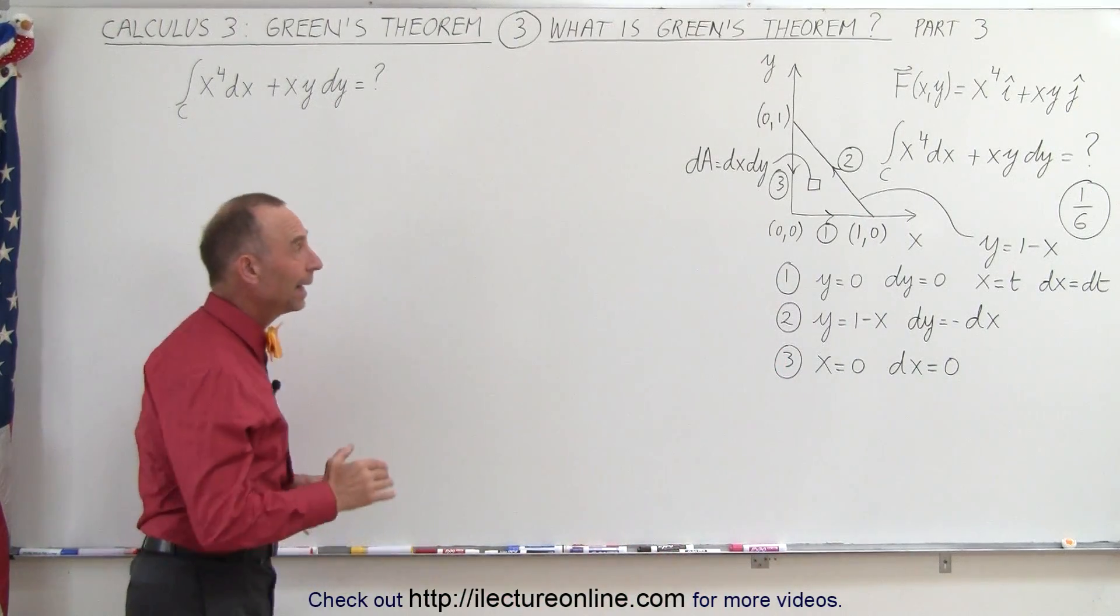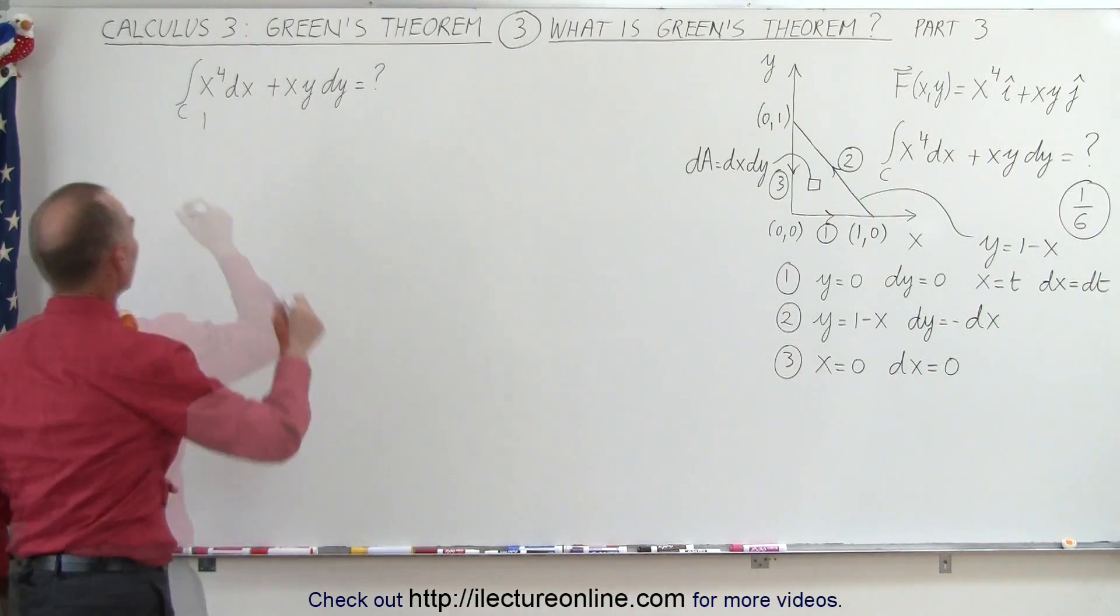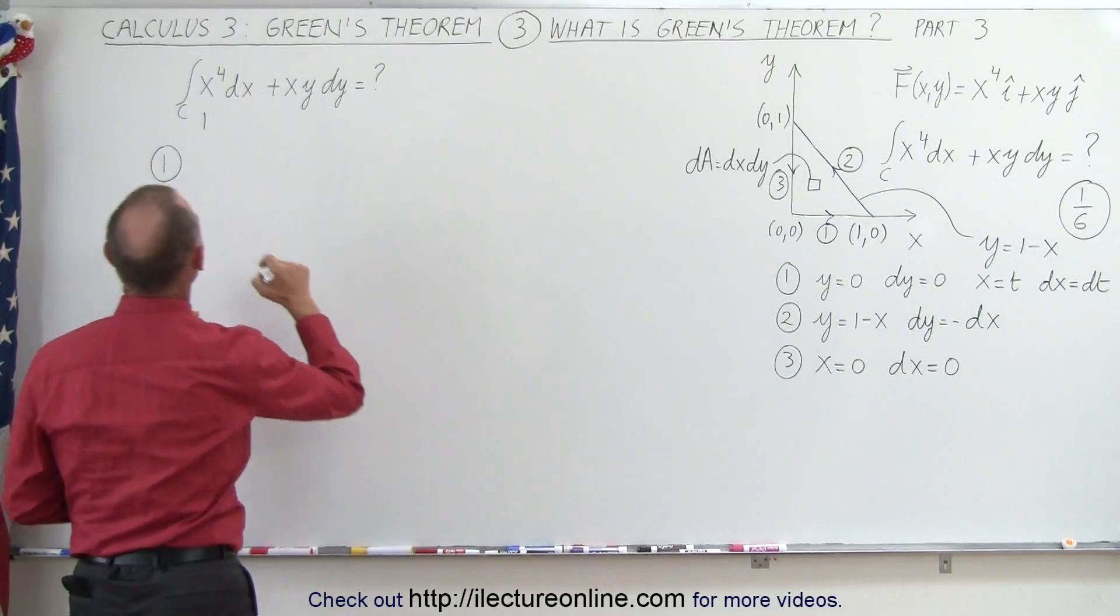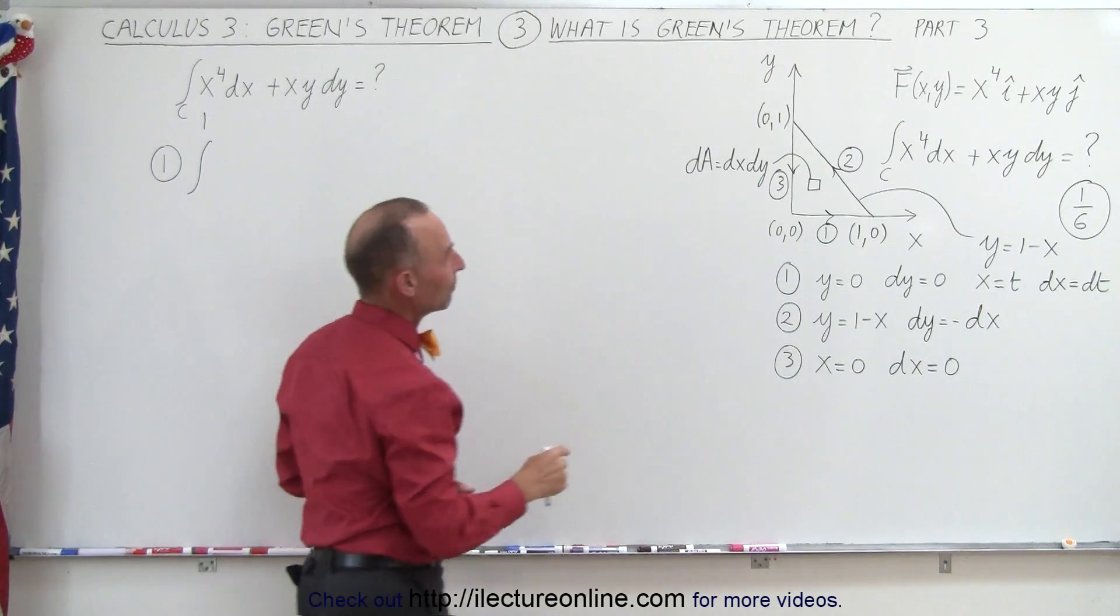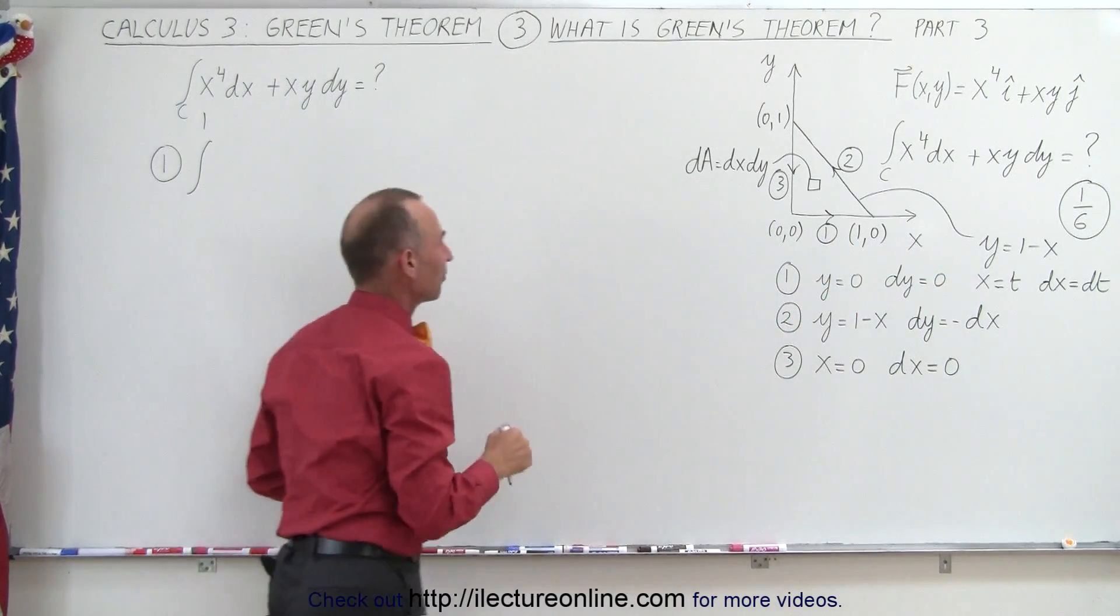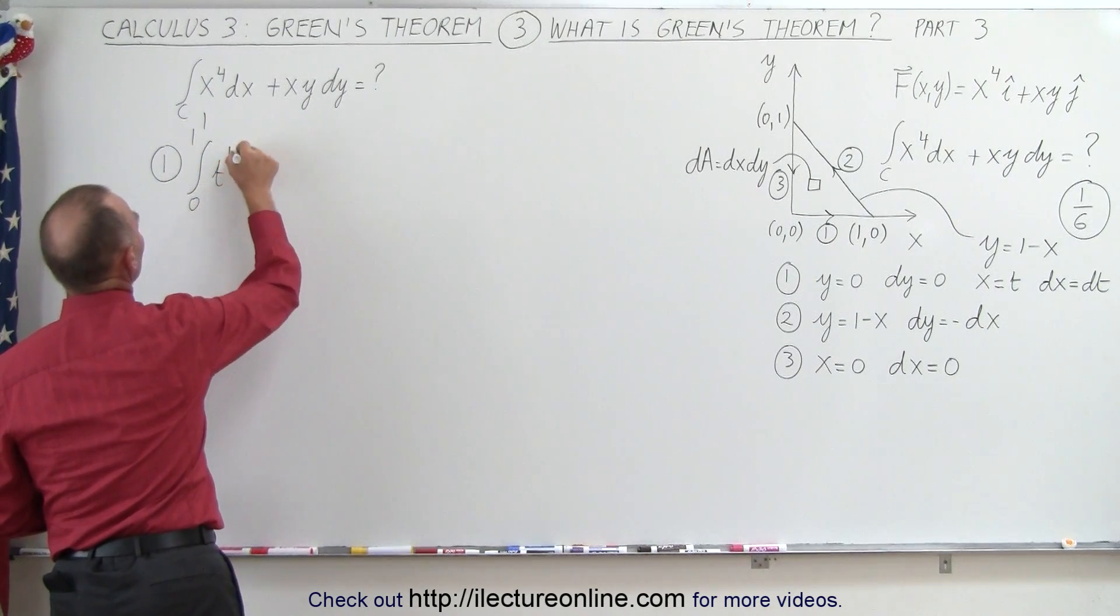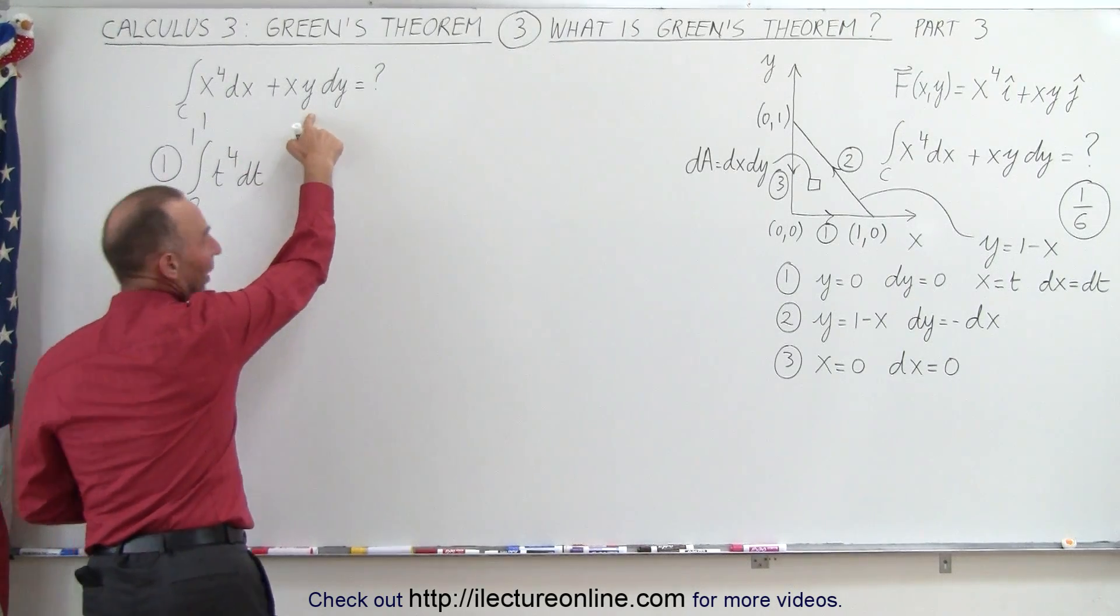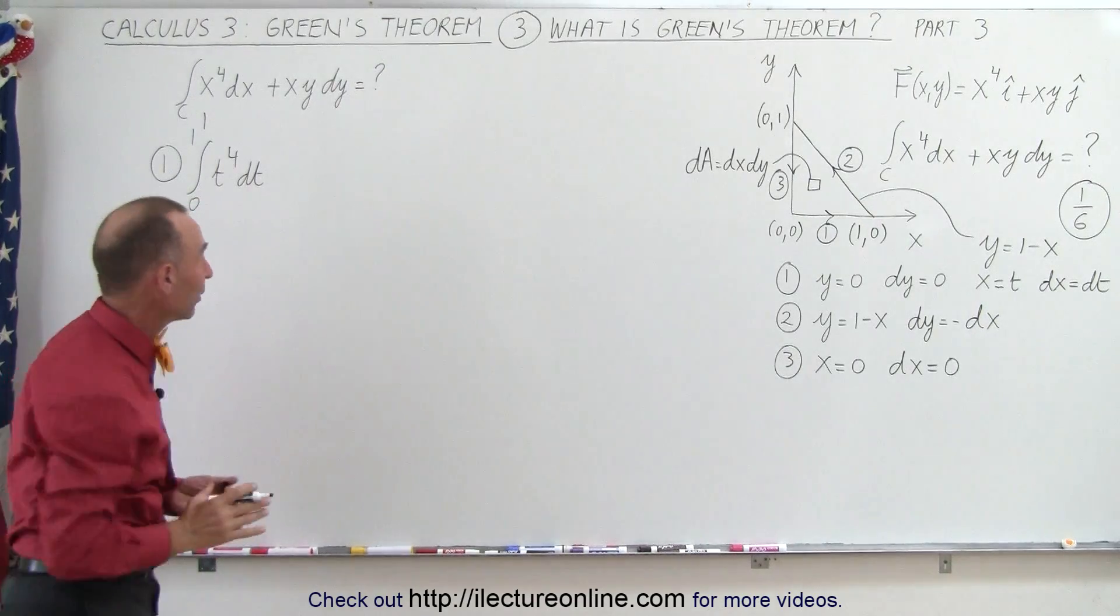So now let's go ahead and integrate over the three portions of the line integral. So let's do the integral over the first curve from (0,0) to (1,0), and the limits of integration are going to be from x equals 0 to x equals 1, but since x equals t, that will be from t equals 0 to t equals 1. x becomes t, so t to the fourth dt, because dx is dt, and since y is equal to 0, we don't have the second part of the integral.